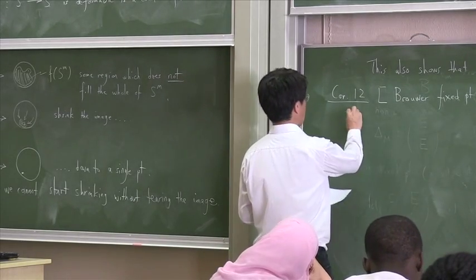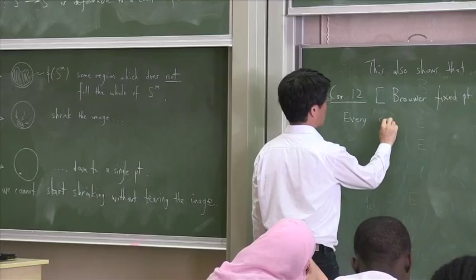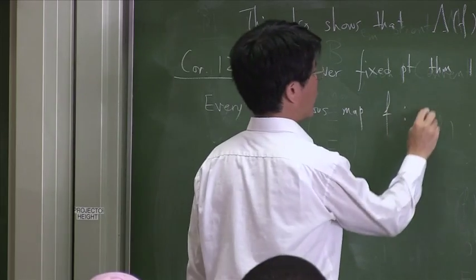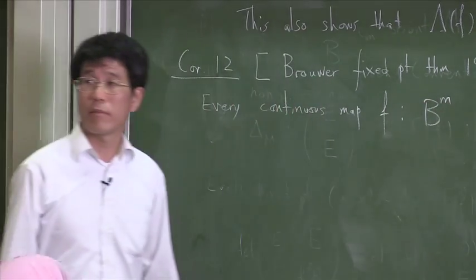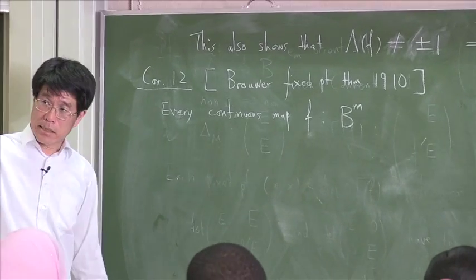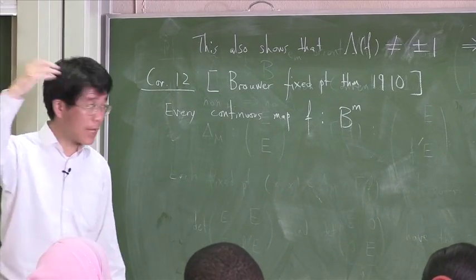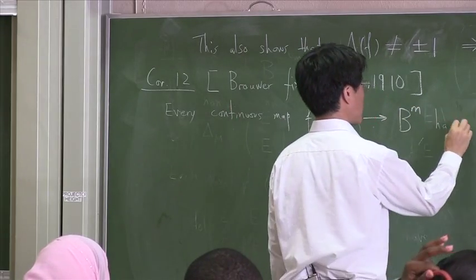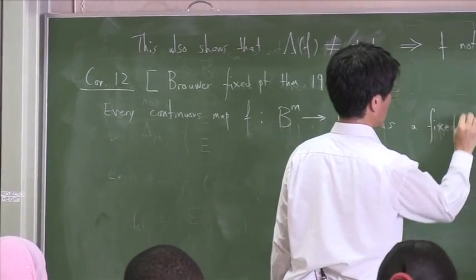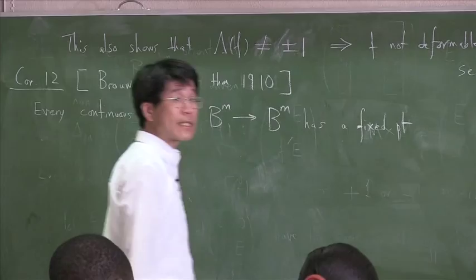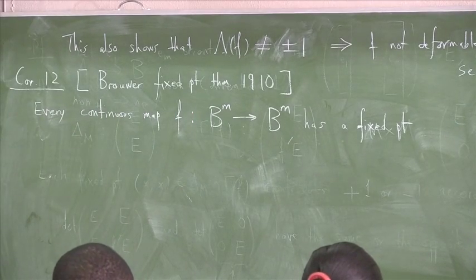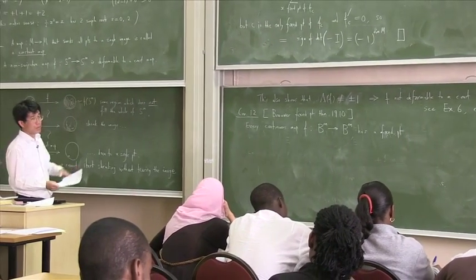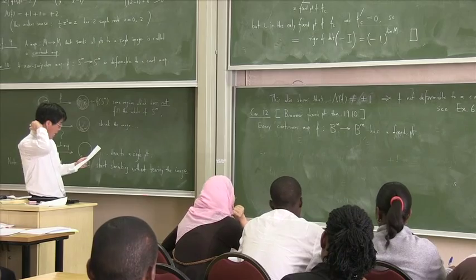For the time being, the statement is that every continuous map F from D^n, the n-ball, the n-dimensional ball, has a fixed point. In particular, if you have a disk, any mapping of the disk into itself which is continuous must have a fixed point.